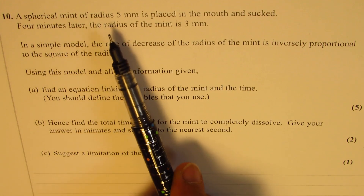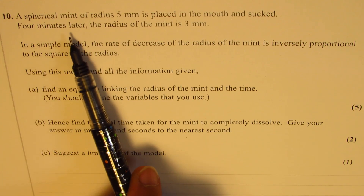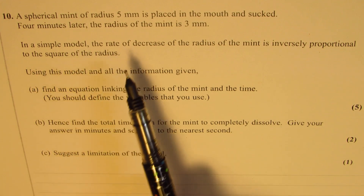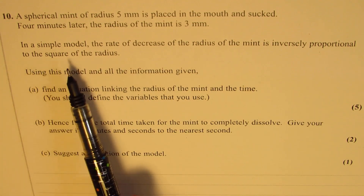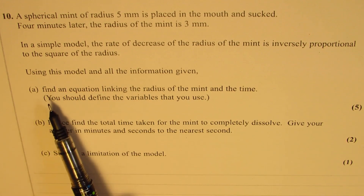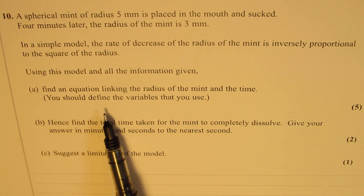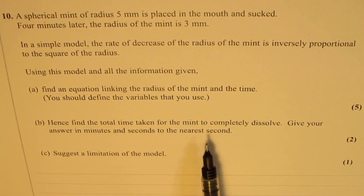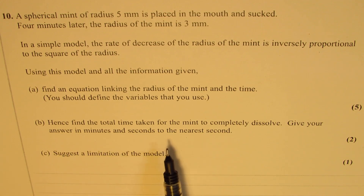A spherical mint of radius 5 mm is placed in the mouth and sucked. Four minutes later, the radius of the mint is 3 mm. In a simple model, the rate of decrease of the radius of the mint is inversely proportional to the square of the radius. Using this model and all the information given, find an equation linking the radius of the mint and the time. You should define the variables that you use. Hence, find the total time taken for the mint to completely dissolve. Give your answer in minutes and seconds to the nearest second.